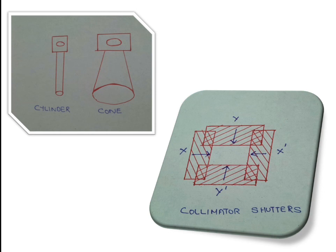The area of exposure is determined based on the body part being examined. For a hand x-ray we need a smaller area; for a finger it decreases further; for a chest x-ray the area will be larger; and for an abdomen x-ray the area is larger still. Using the collimator light, we can see how much area will be exposed and adjust the shutters accordingly to expose only the required area.